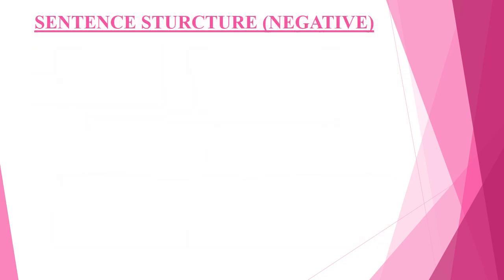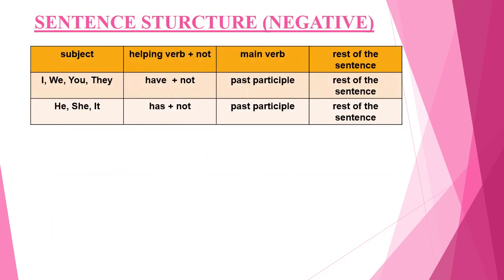For the negative form, with I, we, you, and they, we will use 'have' + 'not' + past participle, and then the rest of the sentence.